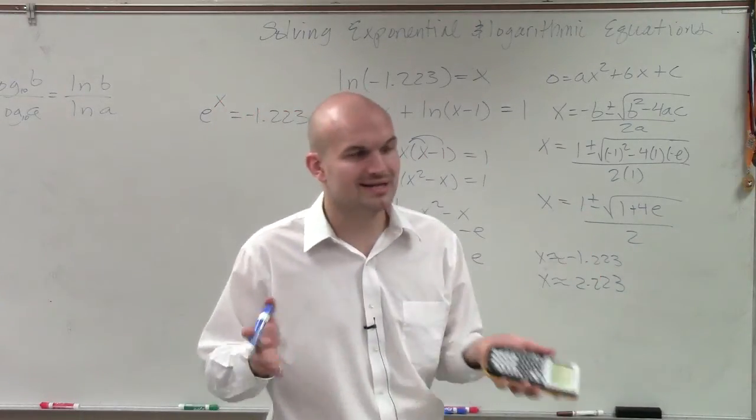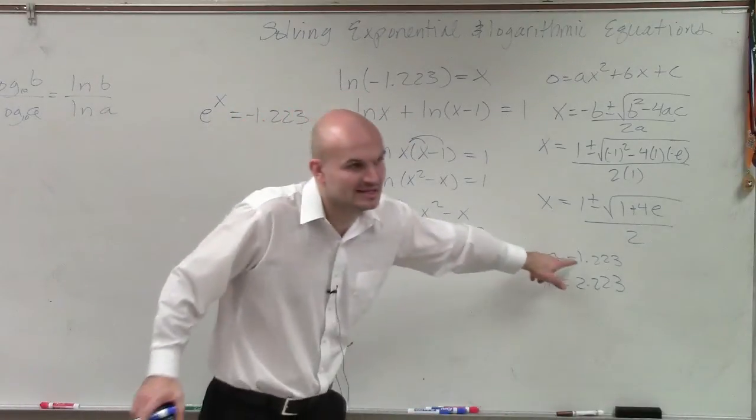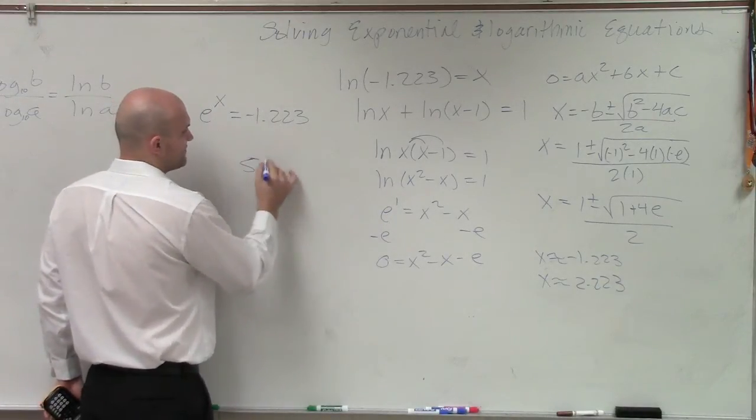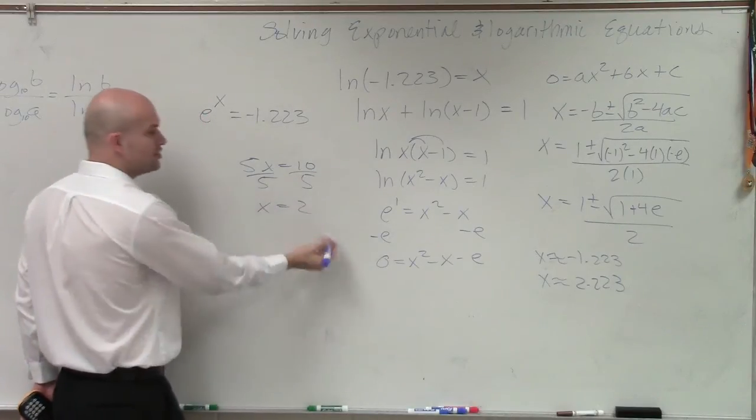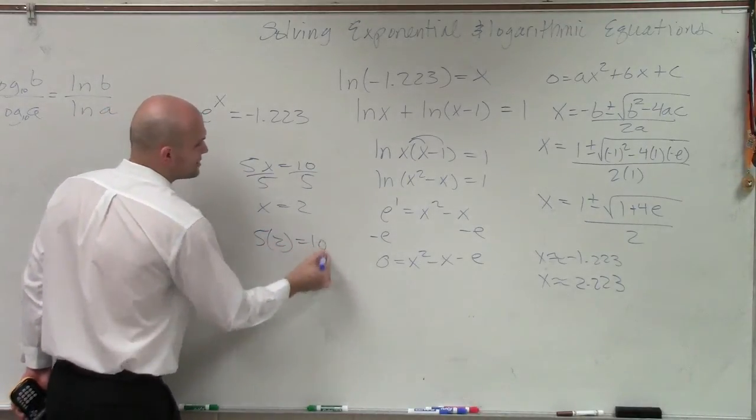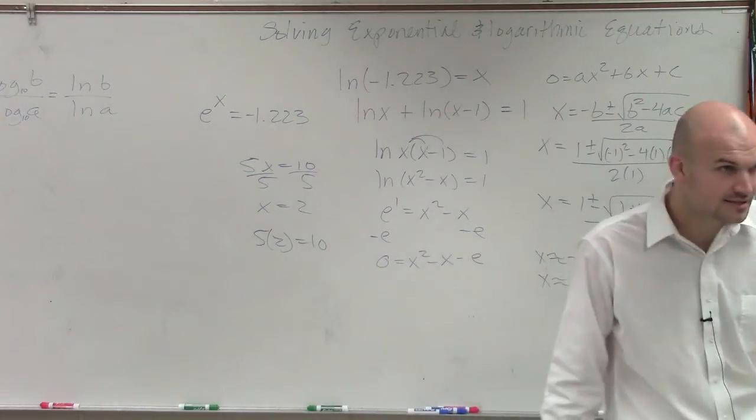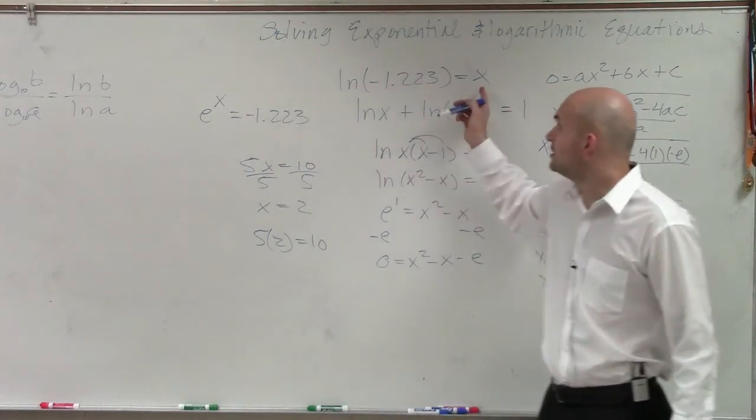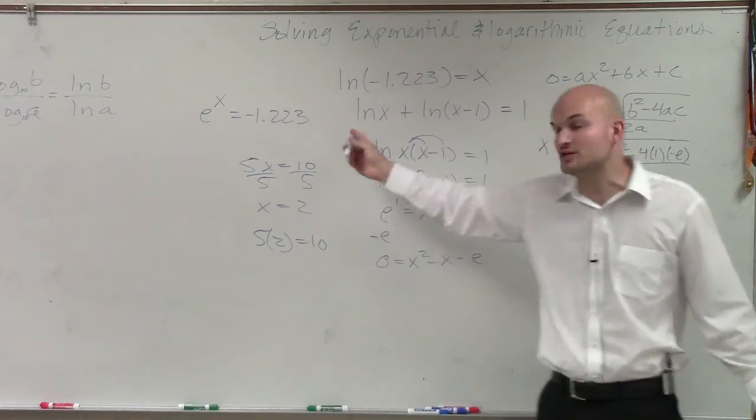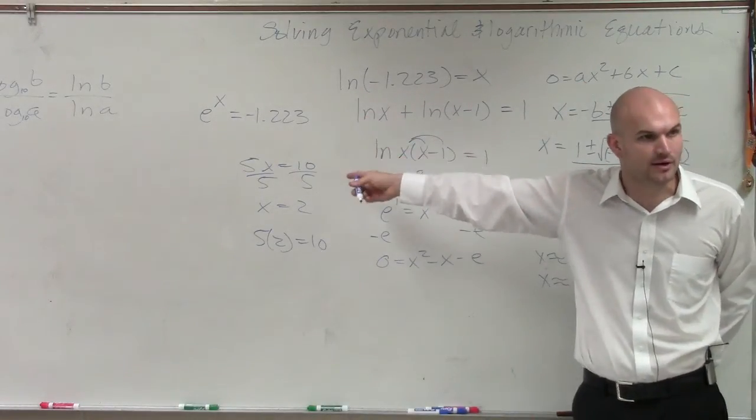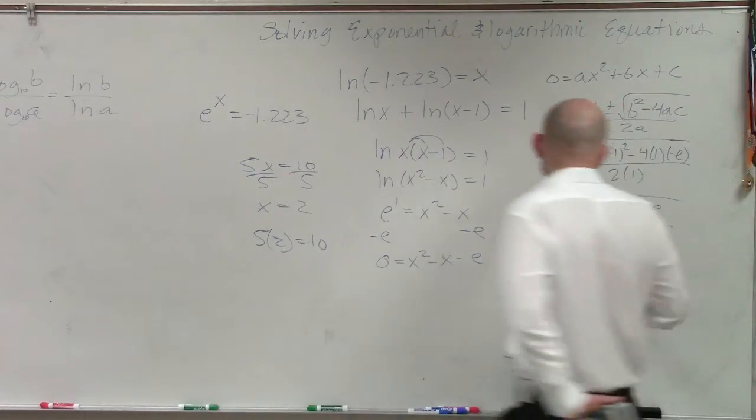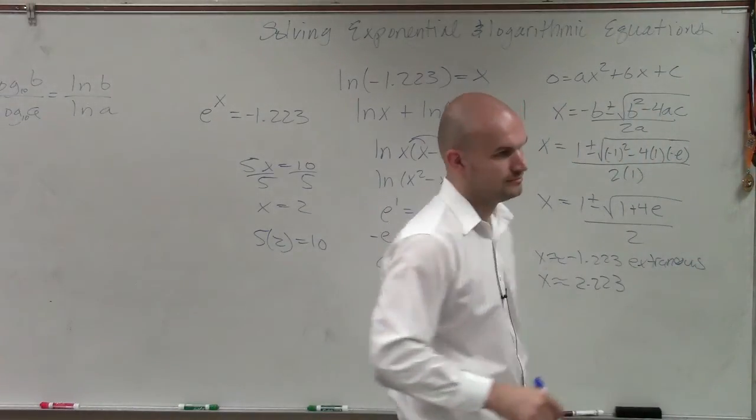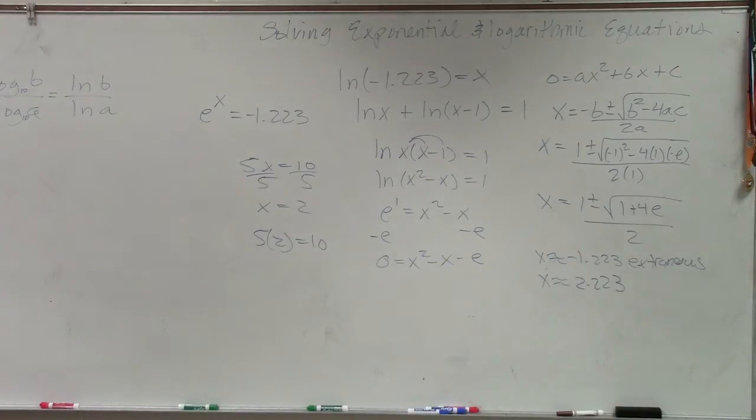Again, this is approximation. But it doesn't need to be exact for you guys to understand that when this is negative, when I plug this back into my equation. You guys remember this. If I said solve 5x equals 10, you divide by 5, x equals 2. You can plug 2 back into the equation and determine if that makes it true or not. So if I find this value, negative 1.223, and I plug it back into my equation, I understand that it's going to be extraneous. It's not part of it, because you can't take the natural logarithm of a negative number.